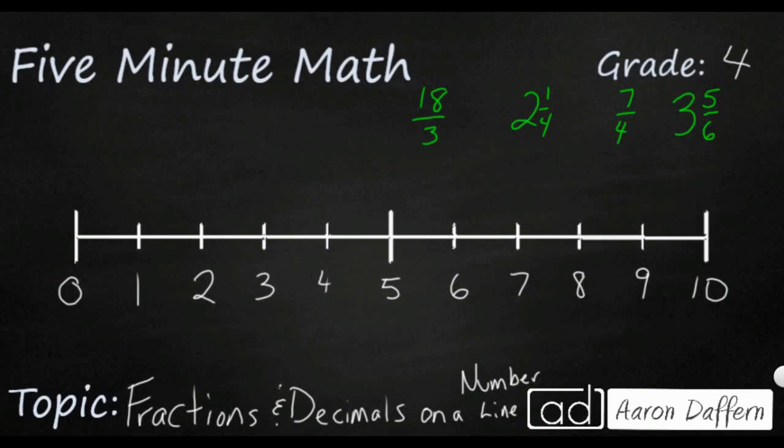So you see we have a basic number line from 0 to 10 but we are going to be placing some different fractions on this number line and they are going to be either mixed numbers or improper fractions. How can we translate those mixed numbers and improper fractions when we put them on this number line when we don't see those actually written in those forms?